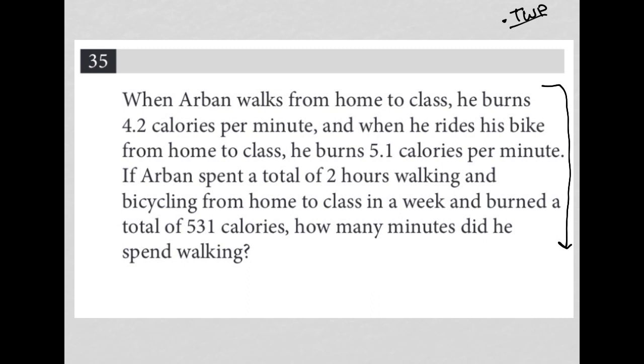So this question starts off by saying when Arban walks from home to class, he burns 4.2 calories per minute. And when he rides his bike from home to class, he burns 5.1 calories per minute. So how do I translate that? I'm going to turn walking into a variable. So I'm going to say W equals 4.2 cal per minute. And biking B equals 5.1 cal per minute.